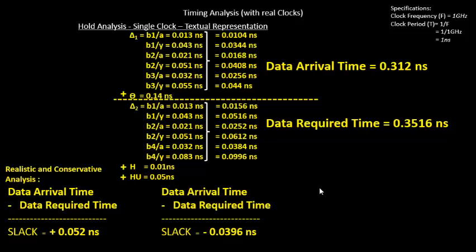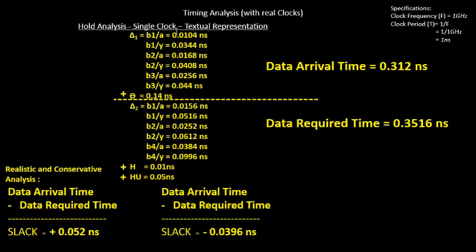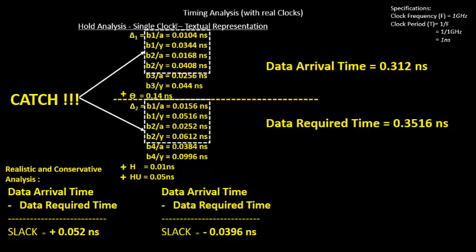But there is a catch — a similar catch that we did in the setup analysis. We just replaced the original numbers with 20% derated values. The catch is, if you look into these two blocks or sections of your clock network delay, they appear to be common — we saw a similar thing in setup analysis as well. The way to remove this extra pessimism is to first calculate the amount of delay by this block, find out the difference — the amount of pessimism that got added — and then we'll see what to do with it.